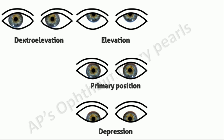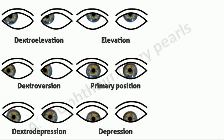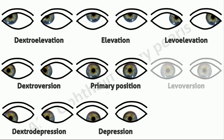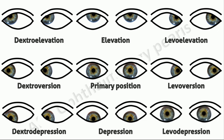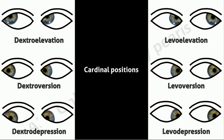The others are: looking up into the right, termed dextro elevation; directly to the right, termed dextroversion; down into the right, termed dextro depression; up into the left, termed levo elevation; directly to the left, termed levoversion; down into the left, termed levo depression. The nine diagnostic positions are for measurement of deviation. These six positions are termed the cardinal positions of gaze.